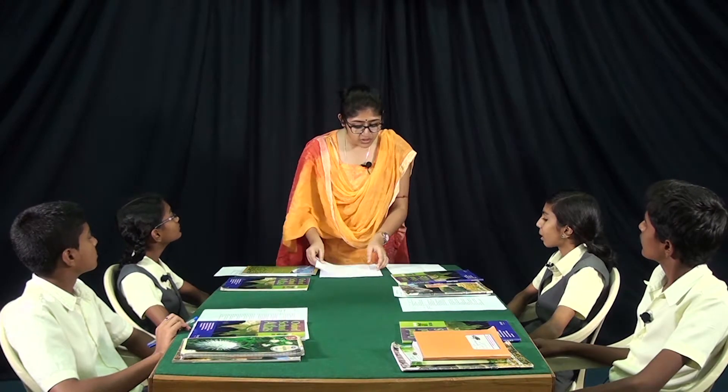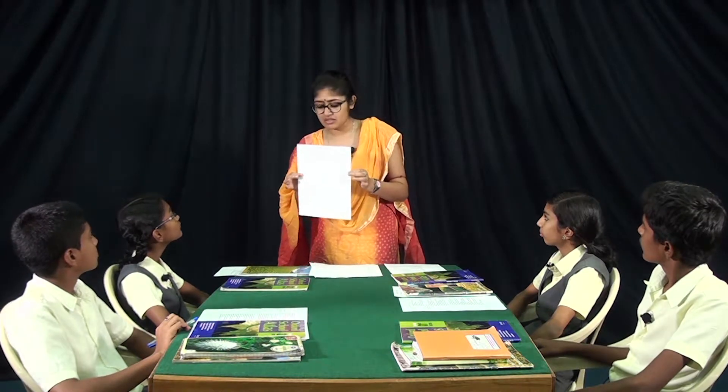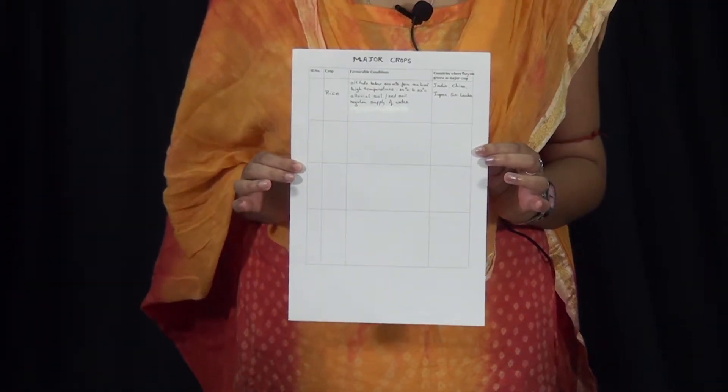The teacher provides an example already worked out — about rice. Aisha reads it: favorable conditions are altitude below 600 meters from sea level, high temperature of 24 to 32 degrees centigrade, alluvial soil or red soil, and regular supply of water.